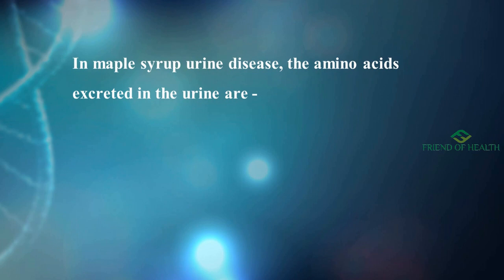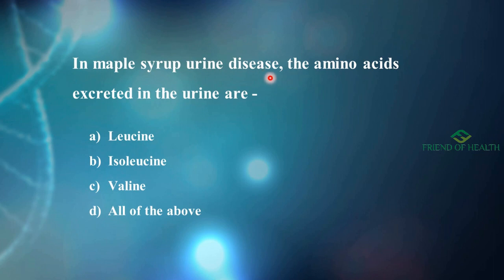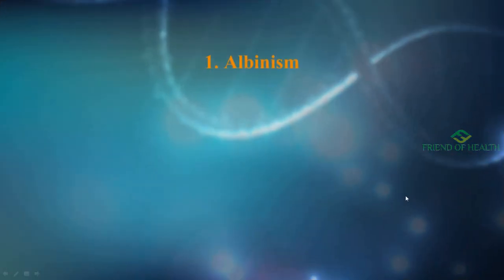Before going to today's 10 genetic disorders, we will see one MCQ. In maple syrup urine disease, the amino acids excreted in the urine are: leucine, isoleucine, valine, or all of the above? The answer will be given at the end of this video when we deal with maple syrup urine disease, its pathogenesis and cardinal features.